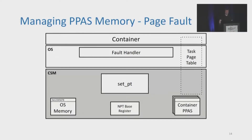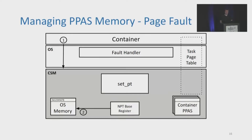As another example of how the ABI is used, I'll go over how the setpt call is used during a page fault and how memory gets added to a protected physical address space. First, a page fault exception occurs in the container. Control goes to the CSM, allowing it to interpose on this exception. The CSM sees that the active process is in a container, so it hides the container's protected physical address space and protects CPU registers. Control is given to the OS and the OS handles the fault. However, the CSM needs to be able to see all page table updates in order to move allocated memory to a container's protected physical address space.